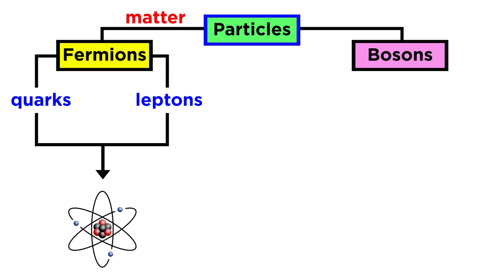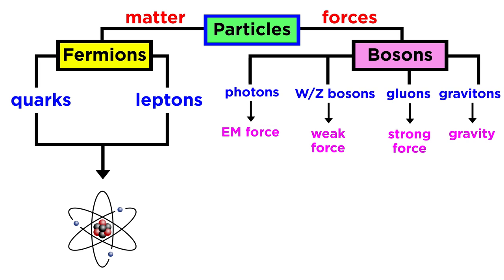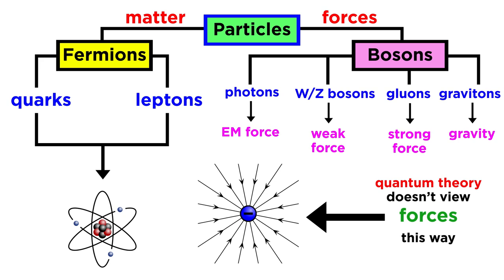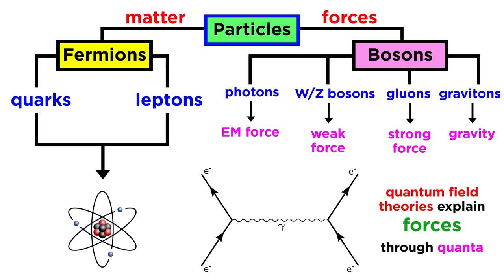Fermions are the particles that comprise ordinary matter, while bosons are the particles that mediate the four fundamental forces, which in quantum theory we no longer view as field forces, but instead as interactions between bosons and fermions.